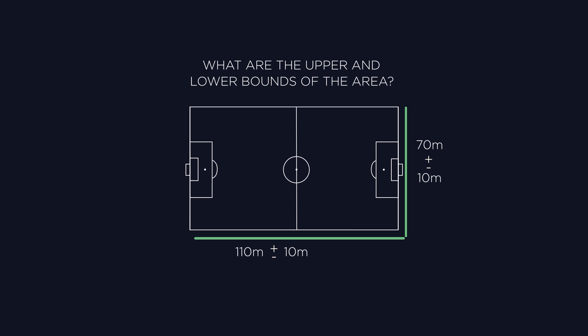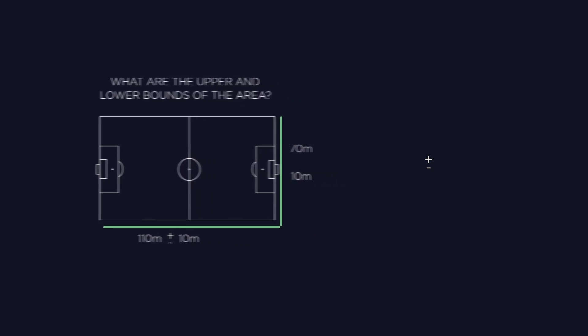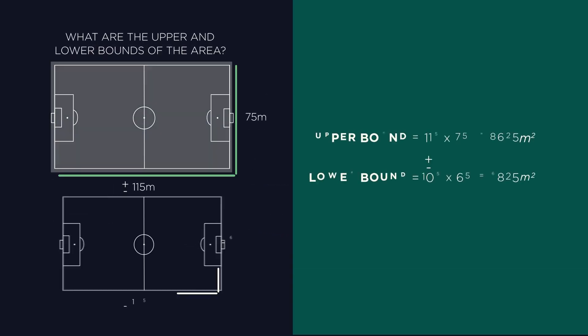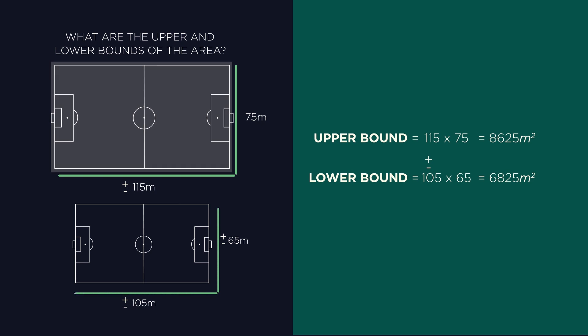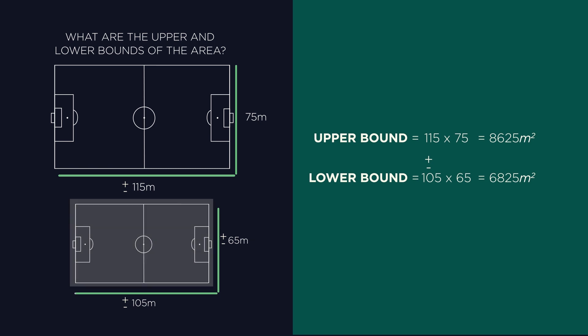Well, this question isn't too tricky. For the upper bound of the area, we need to multiply the upper bounds of both dimensions. And the lower bound of the area, we multiply the lower bounds of both measurements.